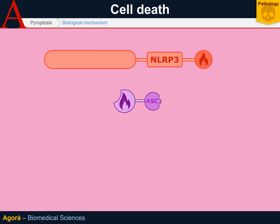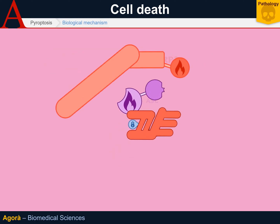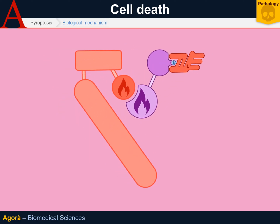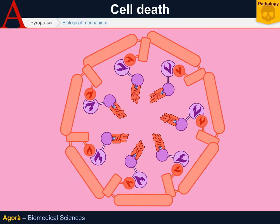The first caspase to be activated is caspase-1, and it is activated by cleavage through the CARD domain of ASC. The removal of the inhibitor domain of the caspase leads to its transformation into its definitive active form. These three molecules interact with each other: the NALP3 pyrin domain binds the ASC pyrin domain, and the CARD domain of ASC binds caspase-1. This complex oligomerizes and forms a very complex structure called the inflammasome or pyroptosome.